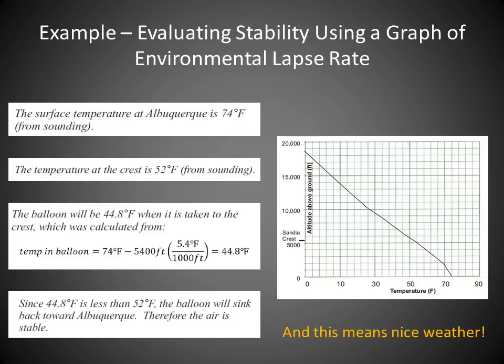That concludes this presentation. I hope this helps with finishing the questions for Part 1, Exercise 1. Exercise 2, about lapse rate, thermals, and cloud formation, should be fairly straightforward as the steps are walked through. If you have questions, please post them on the discussion board. Remember: cloud formation occurs when relative humidity is 100%, which happens when the air temperature equals the dew point temperature.